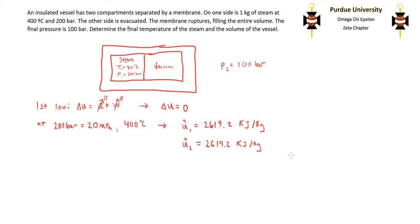At this final state, the pressure P₂ is equal to 100 bar, which is also 10 megapascals. Since we know both the internal energy and the pressure of this final state, the state is completely specified, and we can now use the steam tables to find the final temperature.